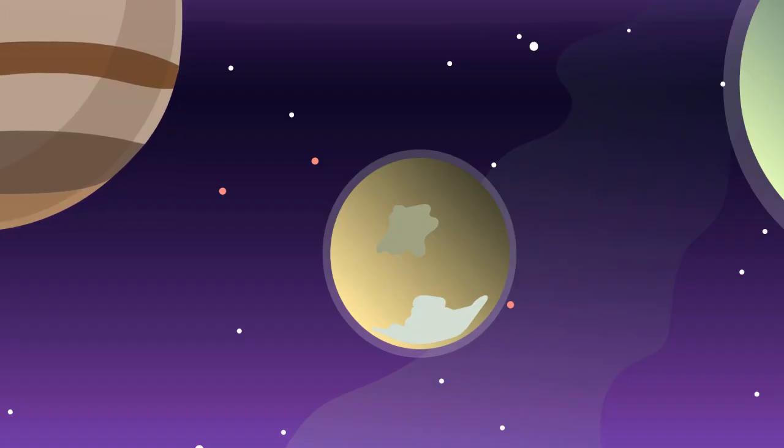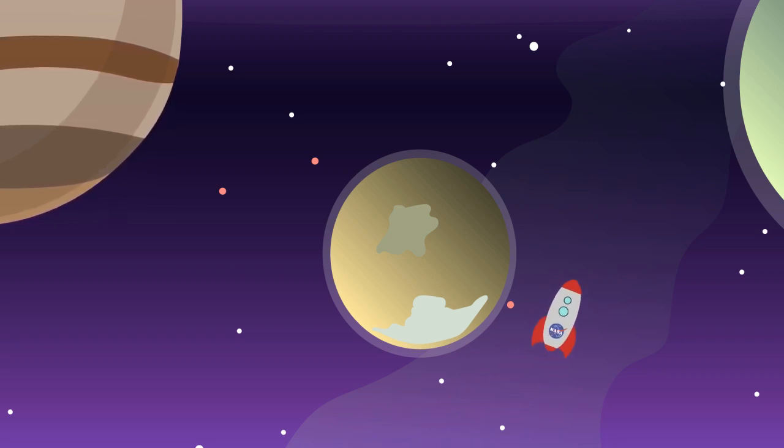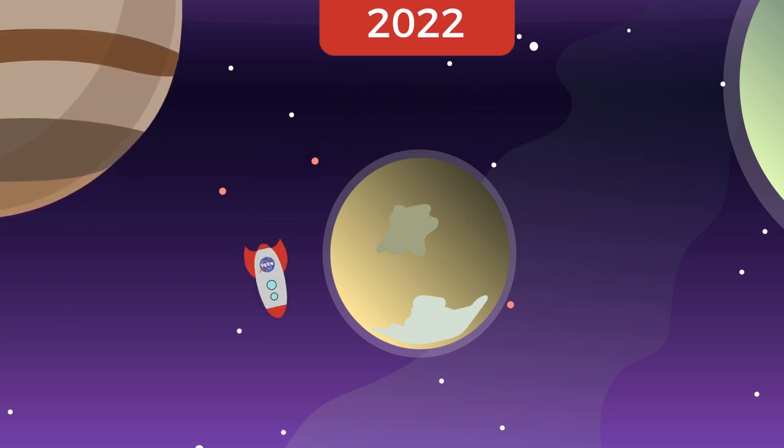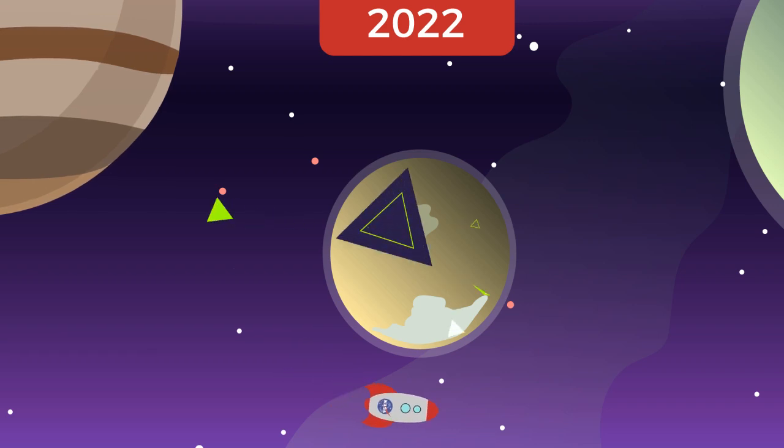NASA is preparing two missions to explore Europa's environment. First, a flyby mission called Europa Clipper to launch around 2022. The second proposed mission is a more ambitious project, a lander to explore the surface.